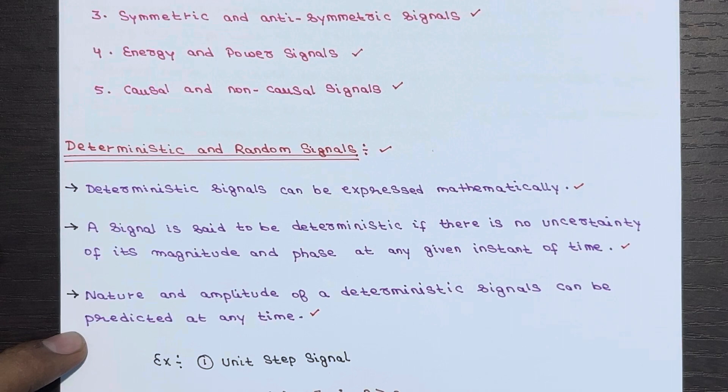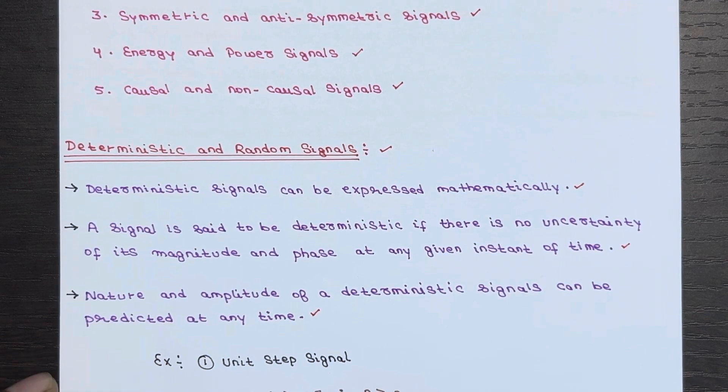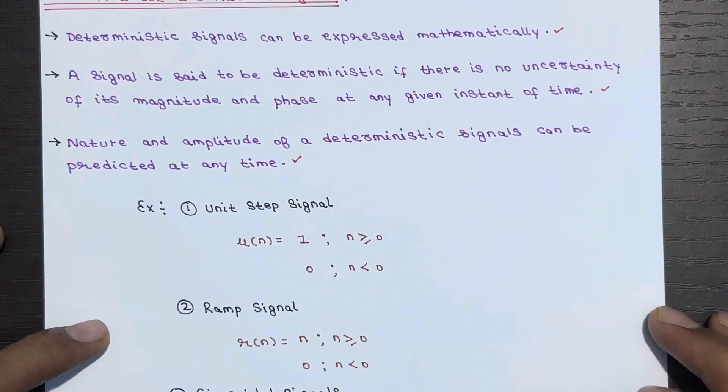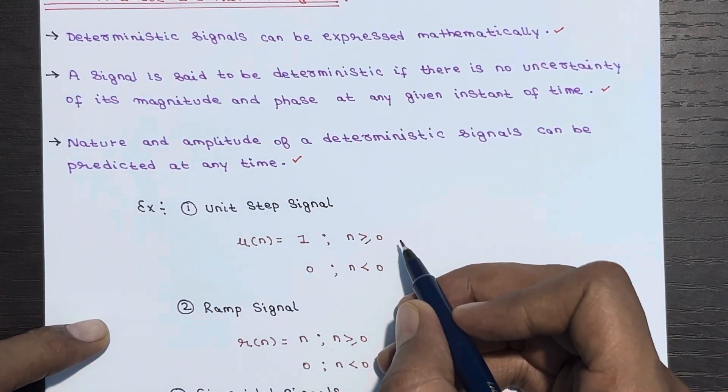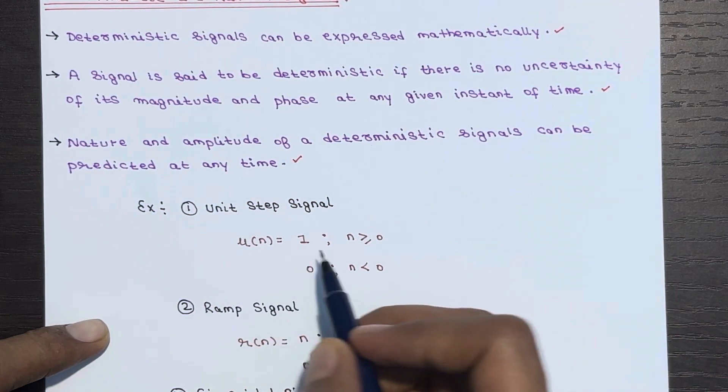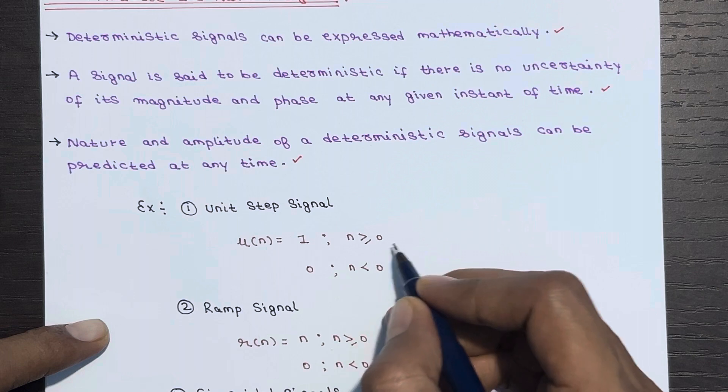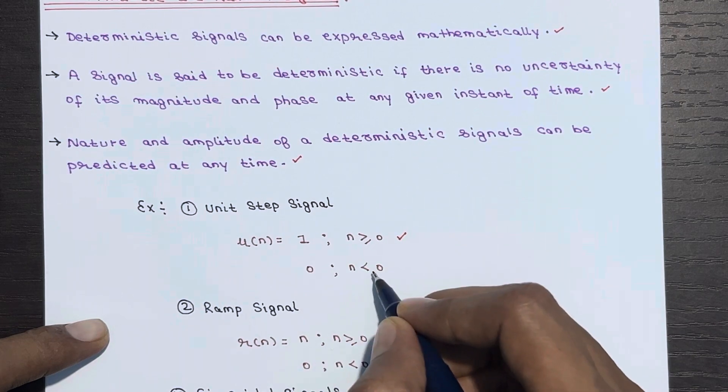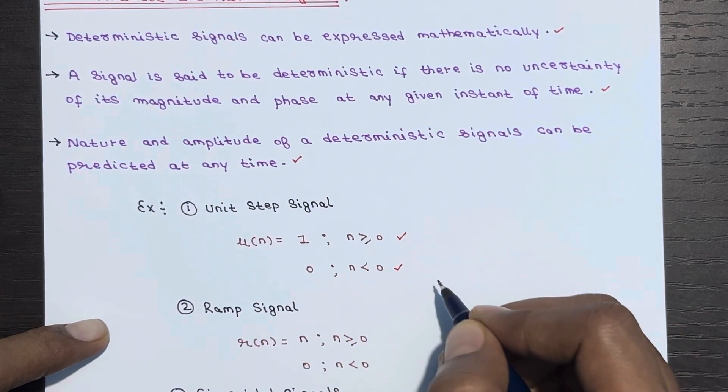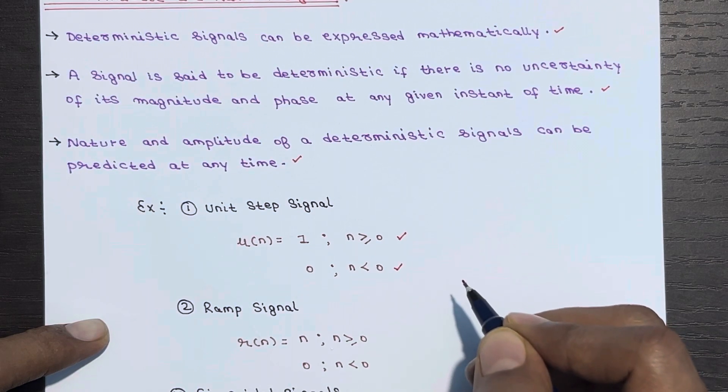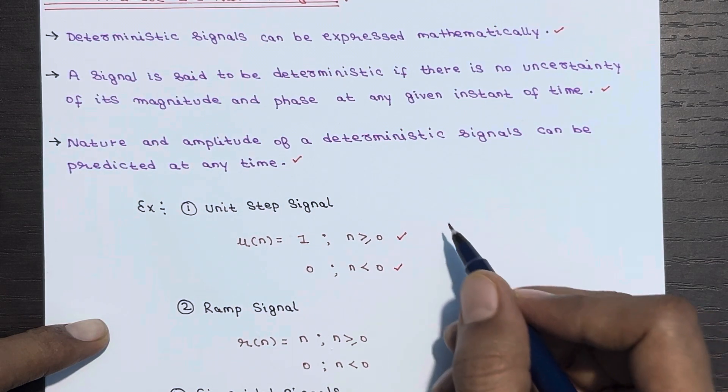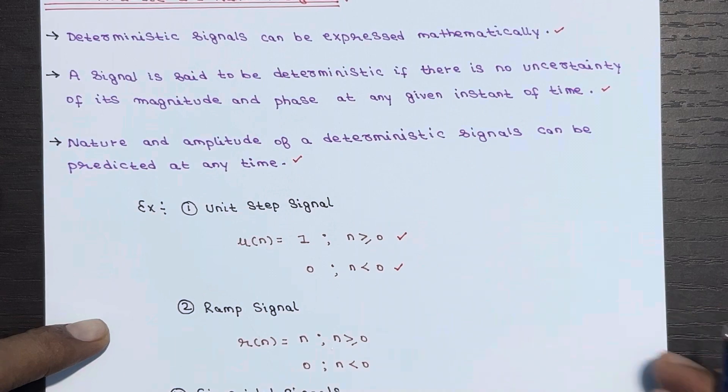Let's look at a few examples of deterministic signals. We have unit step signal which is defined as u(n) = 1 for n ≥ 0 and 0 for n < 0. It is also one kind of deterministic signal because we can express this mathematically.